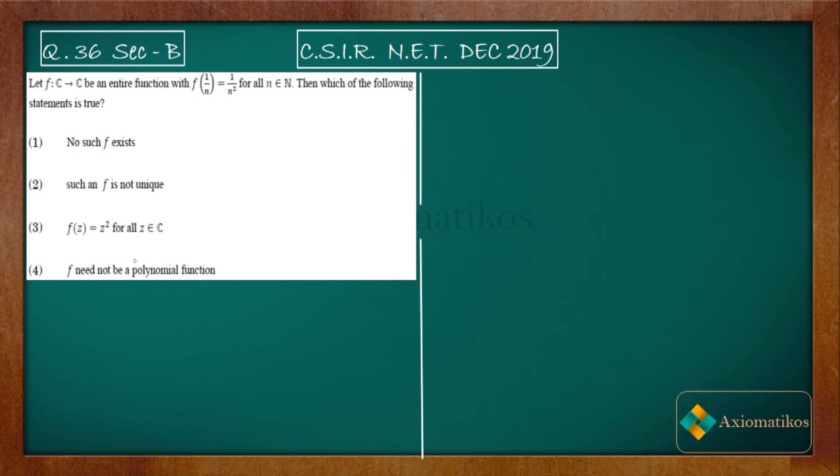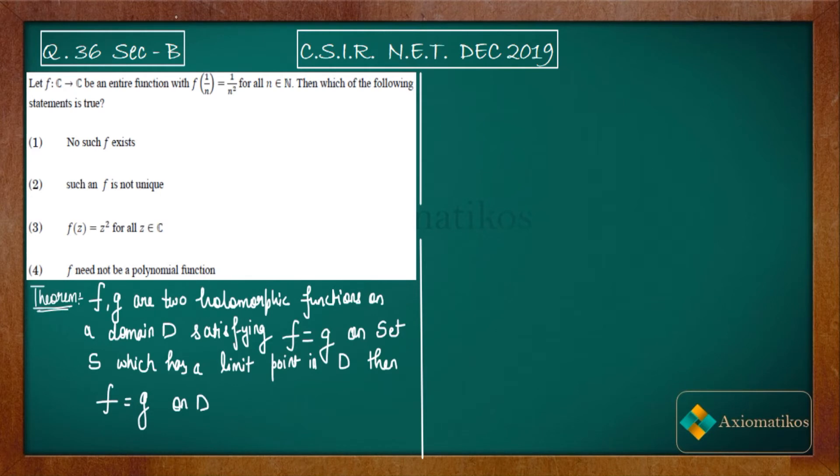So what I will do is I will first state the identity theorem for you and after that we will solve this problem. This is what is called identity theorem: if we have two holomorphic functions on a domain D and there is a set S on which f and g are equal, then what will happen? If this S has a limit point in D, then f is equal to g on D.